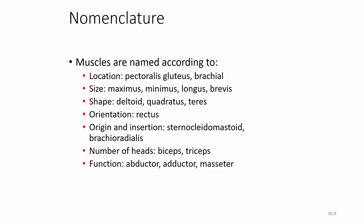Muscles can also be named by number of heads or origins — biceps, triceps, quadriceps — with 'heads' and 'origins' being interchangeable. Or they can be named by function: an abductor moves a body part away from the midline, an adductor moves it back toward the midline. The masseter, for example, is named for mastication, or chewing, and is one of the main chewing muscles.